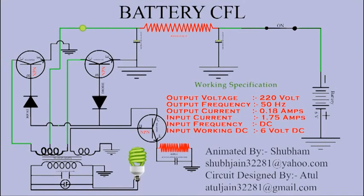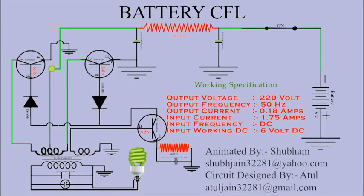This process shown to you is 1 over 65,000 of a second. That is why the movement of electrons is shown slowly. In reality this circuit will work approximately 65,000 times in a second.